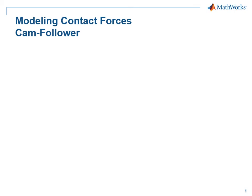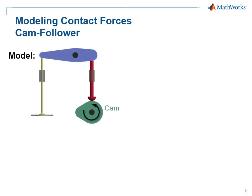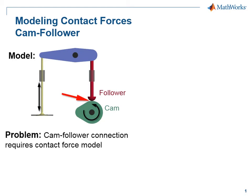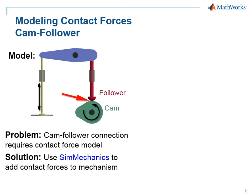In this demonstration, we're going to see how we can use SimMechanics to model a cam follower mechanism. In a cam follower mechanism, a cam rotates, pushing against a follower. The follower acts against a rocker arm to move a valve up and down. The challenge is the connection between the follower and the cam — to model this properly, we need to use contact forces. We will see how we can add contact forces to a SimMechanics model of this mechanism.